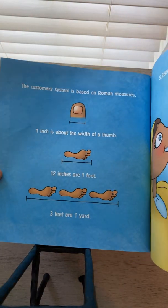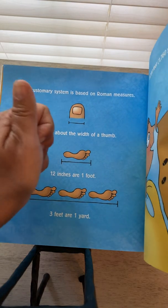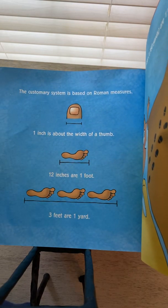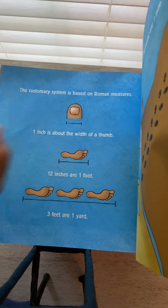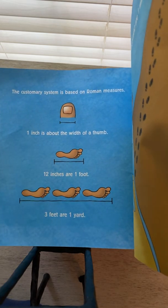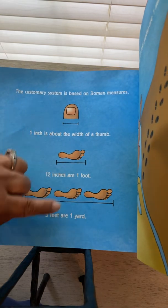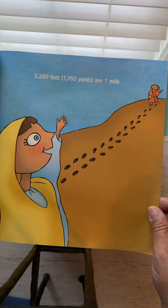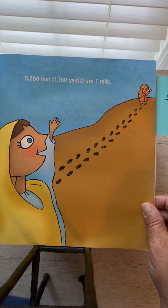For customary, it's based on Roman measures. One inch is about the width of somebody's thumb. If you had 12 inches, that came up to one foot. And if you had three feet, that would equal one yard. So, instead of cubits and palms and spans, they changed it to inches, feet, and yards. And then, 5,280 feet or 1,760 yards equals one mile.